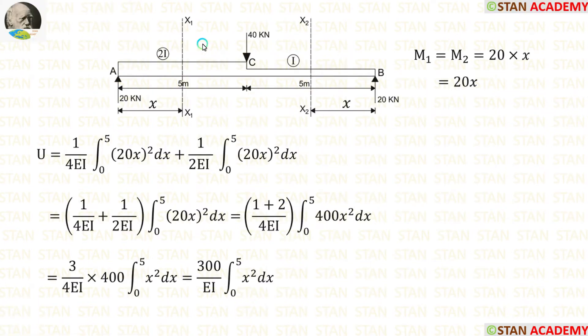You can see that I have made two sections. The first section between A and C, the second section between B and C. Now, let us calculate M1. For that, we have to take moment about the section. We are having only one load up to the section, that is 20 kN. And the distance is x. So, 20 into the distance x, we will get M1.